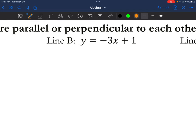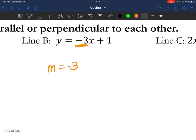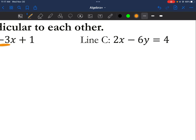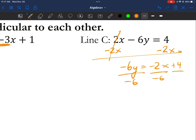Line b, well, I actually don't have to do anything. My slope is right here. m equals negative 3. And then line c. We do have to rearrange this. I have to get it into slope intercept form in order for me to get the final slope. So I'm going to divide by negative 6 now. And make sure I simplify completely. y equals 1 third x minus 2 thirds. So my slope here is 1 third.